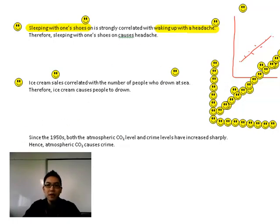Last one: since the 1950s, both the atmospheric carbon dioxide level and crime levels have increased sharply. Therefore, atmospheric carbon dioxide causes crime. A lot of things have increased since the 1950s.